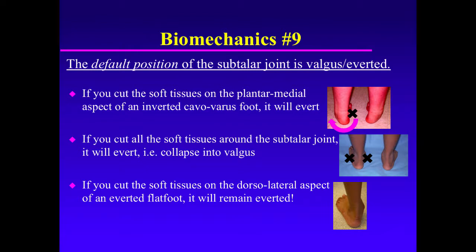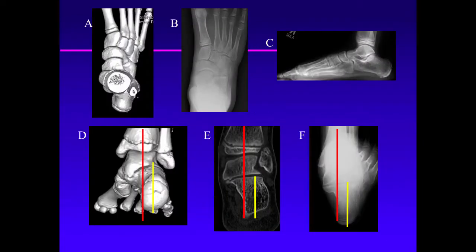If you cut all the soft tissues around the subtalar joint, it will evert and collapse into valgus. If you cut the soft tissues on the dorsolateral aspect of an everted flat foot, it will remain everted. The reason for that is that the weight-bearing axis of the calcaneus is lateral to the weight-bearing axis of the tibia.